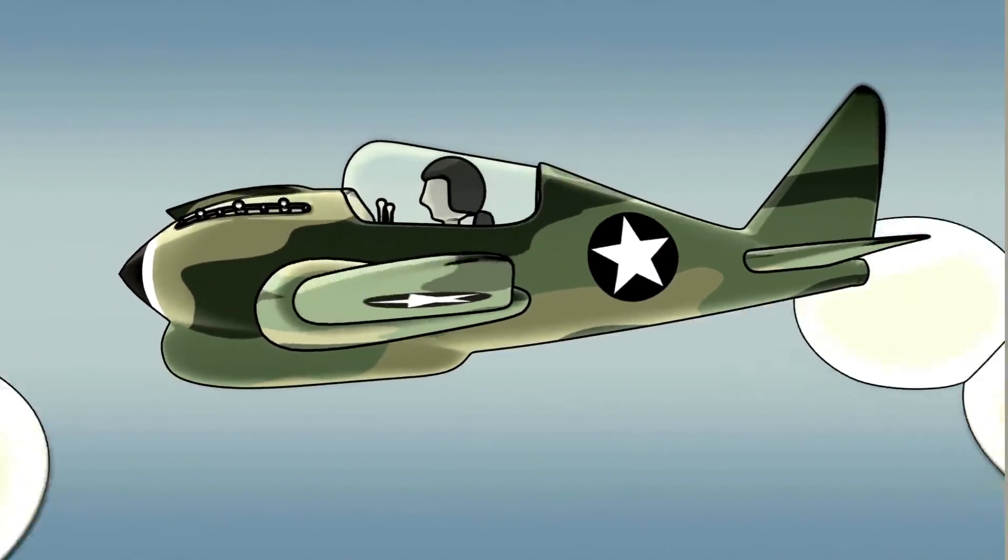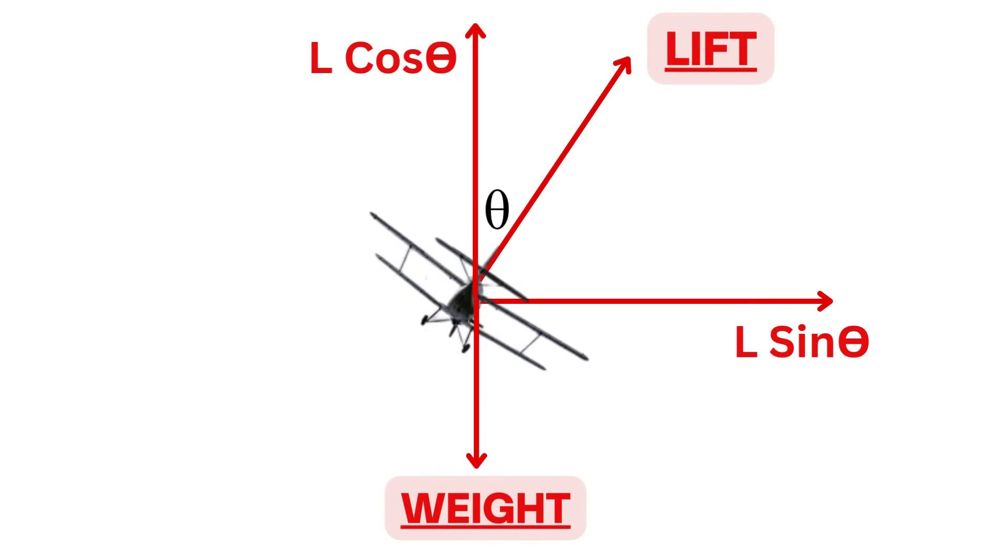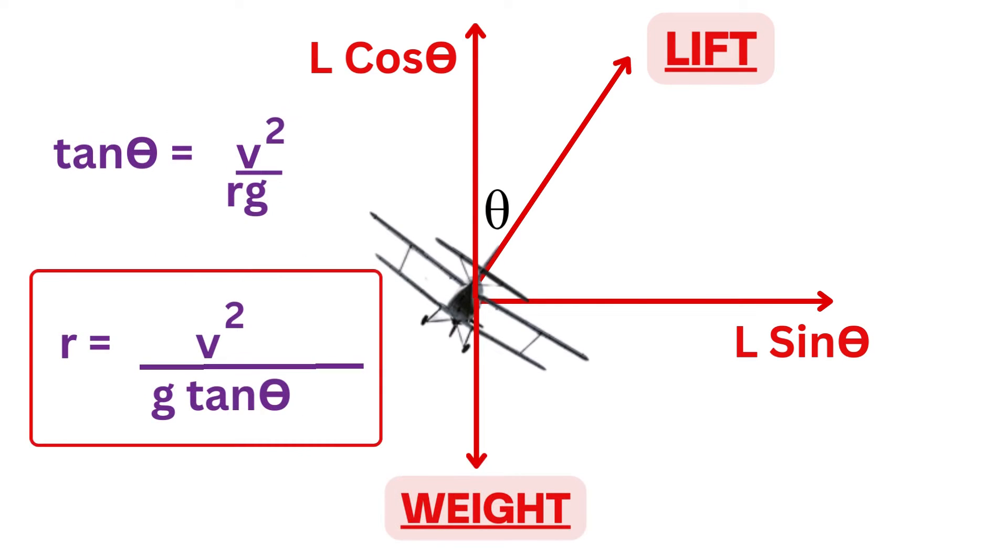If you do not apply the backward pressure, the aircraft will descend. A component of lift that is L sin theta provides centripetal force and L cos theta balances the weight. So L sin theta is centripetal force which is mass into acceleration that is mv square by r. L cos theta equals weight which is mass into gravity which is mg. So tan theta becomes v square upon rg. And from this, we get the radius of turn formula as r equals v square upon g tan theta.